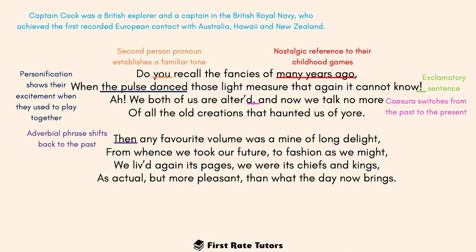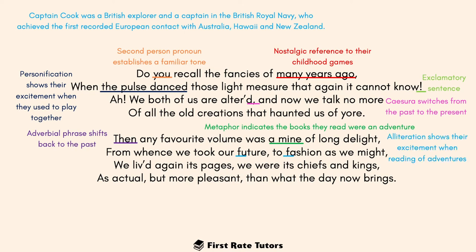In the following stanza, the speaker shifts back to the past with an adverbial phrase of time: 'then any favourite volume was a mine of long delight.' 'Volume' here refers to books — any kind of book put before them as a child they really enjoyed. The metaphor of a 'mine' indicates that books were like adventures, almost like digging and finding valuable treasures within. The alliteration of 'future' and 'fashion' in the second line of this stanza shows the excitement when they used to read adventures.